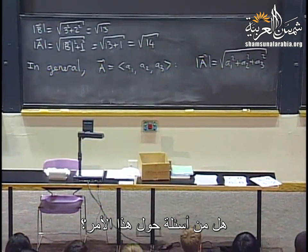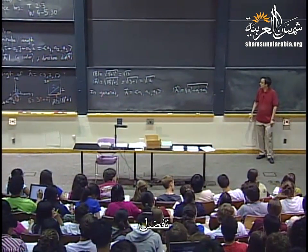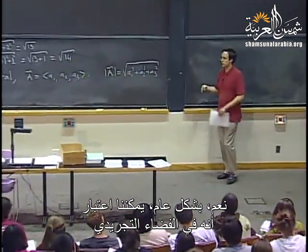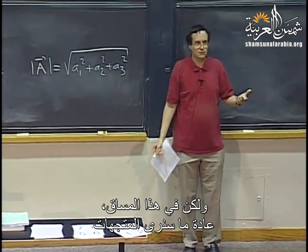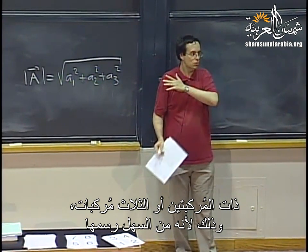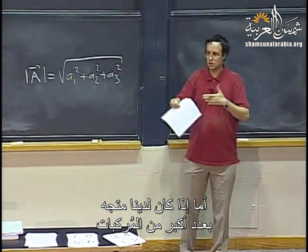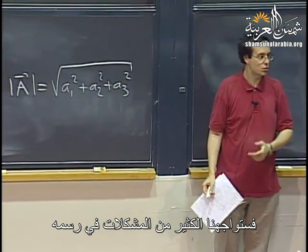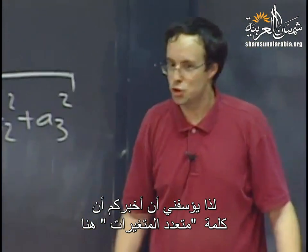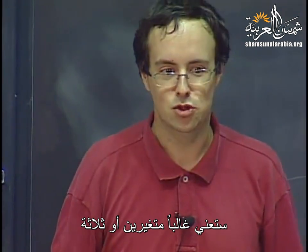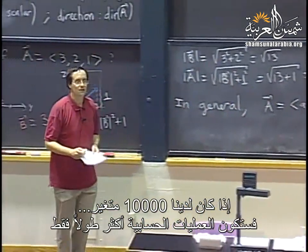The general formula: if we have a vector with components a1, a2, a3, then the length of A is the square root of a1 squared plus a2 squared plus a3 squared. This pattern does continue for higher dimensions — we can consider vectors in abstract spaces with any number of coordinates, and the length formula still applies by summing the squares of all components. In this class, we will mostly see vectors with two or three components because they are easier to draw, but the math works exactly the same way whether you have three variables or a million variables.